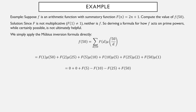Now µ(50) = µ(25) = 0 because 50 and 25 have square factors (25 = 5²). µ(10) = 1, µ(5) = µ(2) = -1, and µ(1) = 1. So f(50) = F(1)·µ(50) + F(2)·µ(25) + F(5)·µ(10) + F(10)·µ(5) + F(25)·µ(2) + F(50)·µ(1) = 11 - 21 - 51 + 101 = 40. Even when f is not multiplicative, the Möbius inversion formula is still quite doable as long as the number doesn't have too many divisors to list by hand.